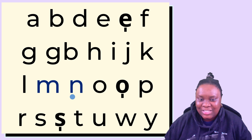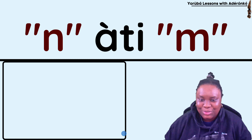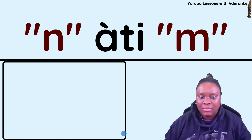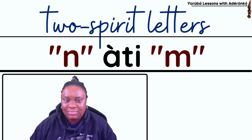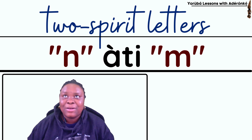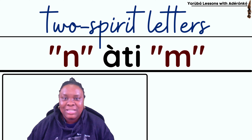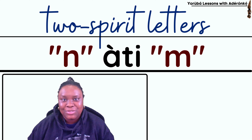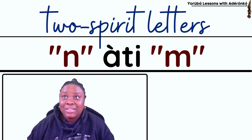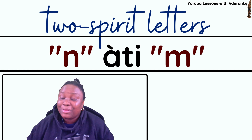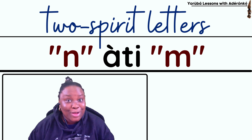These are the points of concentration: ni and mi. You can call them two-spirit letters. They are consonants — when you're thinking about Yoruba consonants, you mention them. Typically you don't mention them when you're thinking about vowels, because it's not what they are by default. It is only in a specific case that they become vowels. They look like consonants, they were birthed as consonants, but they are also vowels.